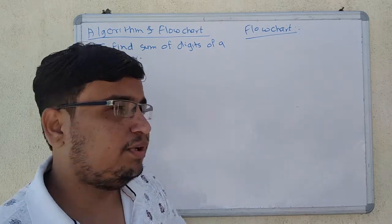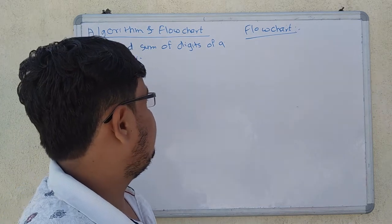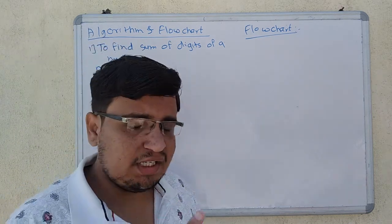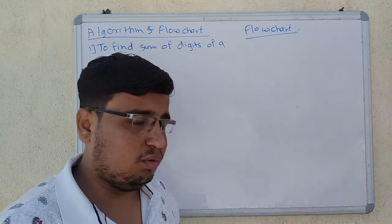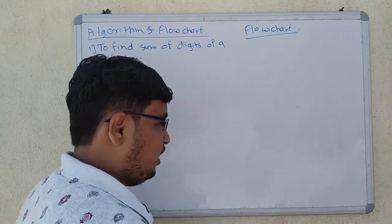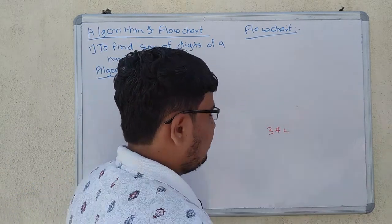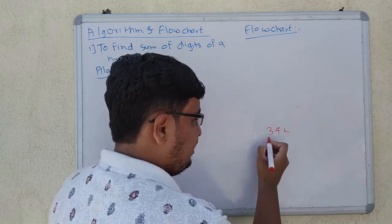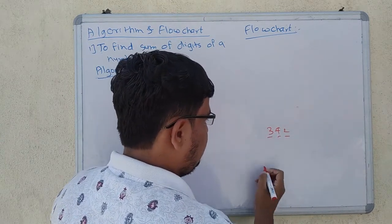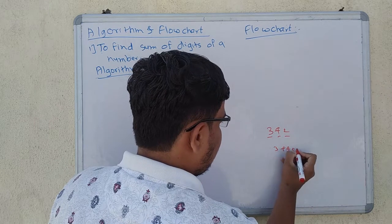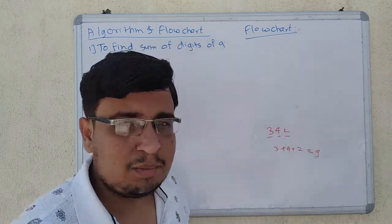Today's example is Algorithm & Flowchart to find the sum of digits of a number. If we give a number and say that the digits will be added — for example, if I give the number 342, then 3 plus 4 plus 2 is equal to 9.